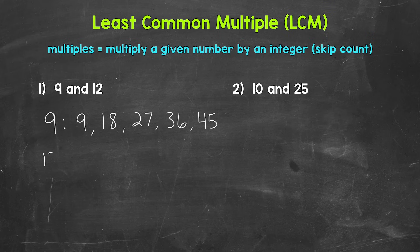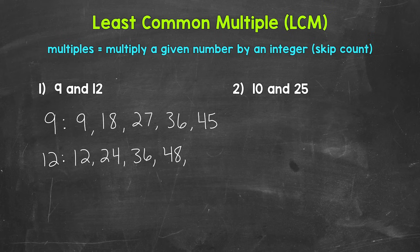Now let's list the first 5 multiples of 12. 12 times 1 is 12, 12 times 2 is 24, 12 times 3 is 36, 12 times 4 is 48, and 12 times 5 is 60. So again, you can see that we skip counted by 12: 12, 24, 36, 48, 60, so on and so forth.